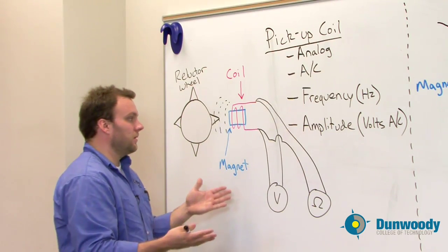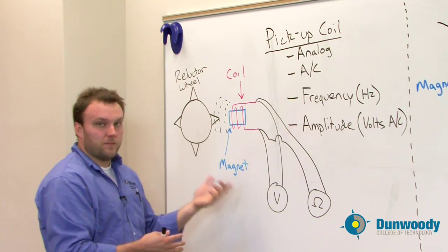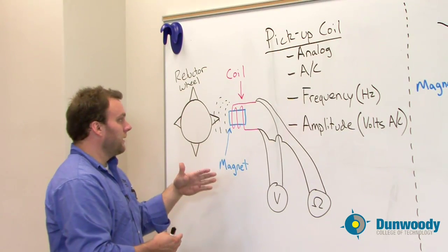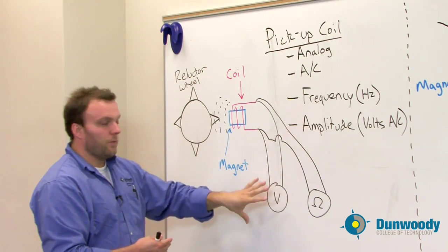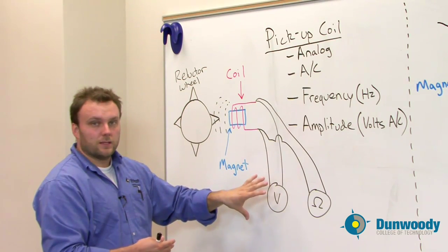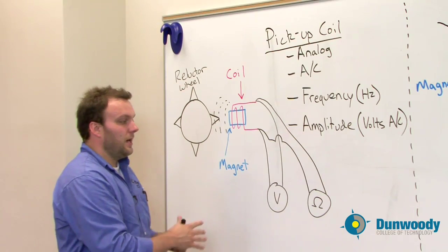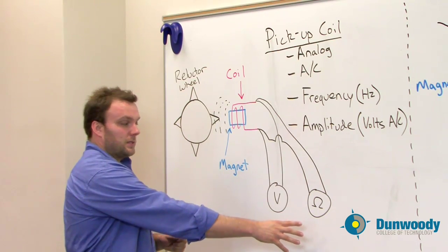However, if there's good resistance, there may be another problem, such as a cracked magnet, a worn-out magnet, perhaps the shutter blades on here are not working properly, and we wouldn't get an AC voltage out of this system. So we need to make sure we're doing both of these tests and not relying on just the resistance test.